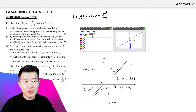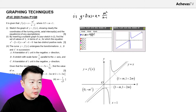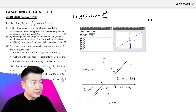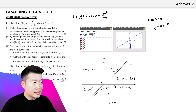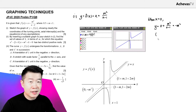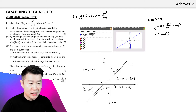To find the y-intercept, we set x = 0. When x = 0, y = (0 + m²)/(0 − 1) = −m². So the y-intercept has coordinates (0, −m²), as indicated on the graph.